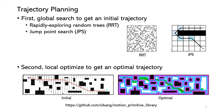Second, we need to do local optimization to get an optimal trajectory. The left figure shows the initial red trajectory from the grid search, and after optimization it becomes the blue trajectory shown in the right figure.